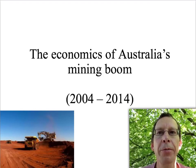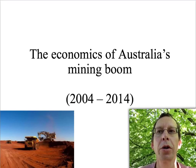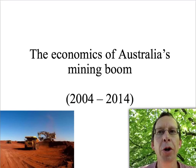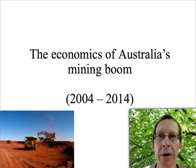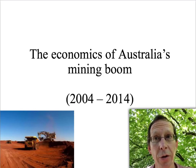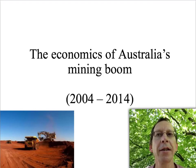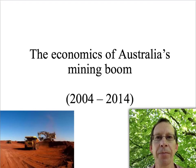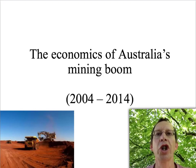World commodity prices for coal and iron ore, two of the main commodities produced by Australian miners, were low. Mines were firing workers, and some mines were closing down. Then around 2004, something changed. That something was called China.